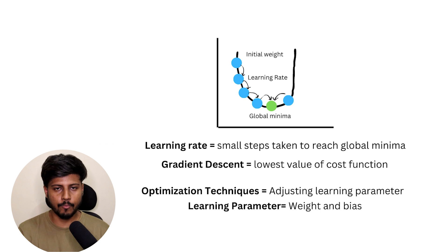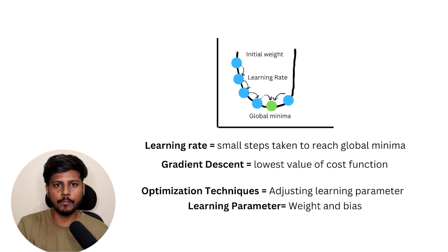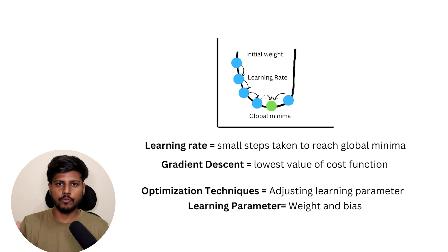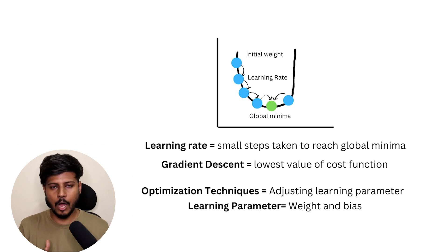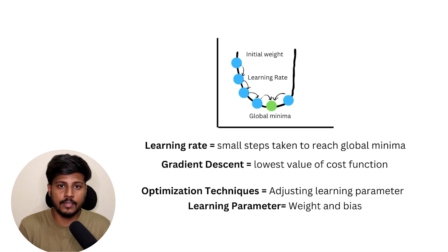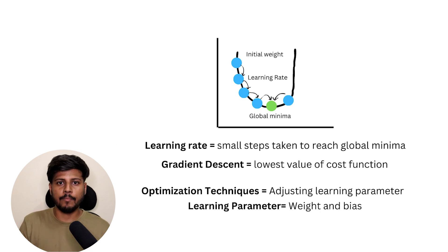The algorithm doesn't initially know where the local minima is. There might be a situation where you are decreasing the value and then suddenly the value starts increasing, so we need to adjust our learning parameters in such a way that it converges to the local minima. This is how gradient descent works. Essentially, optimization techniques refer to the adjustment of the learning parameters — weights and biases — to optimize the neural network.